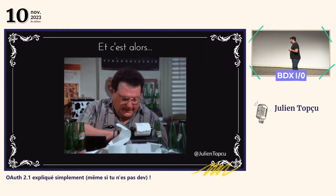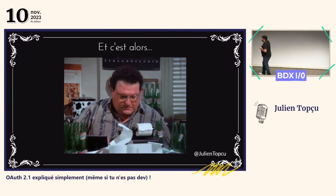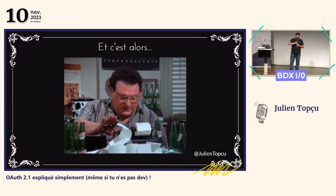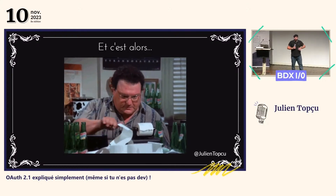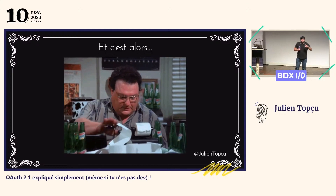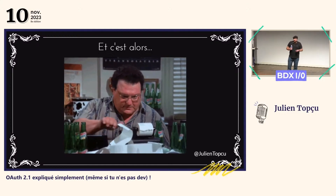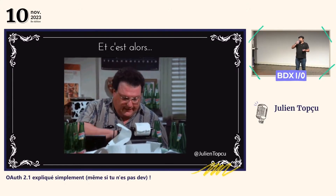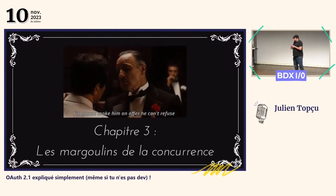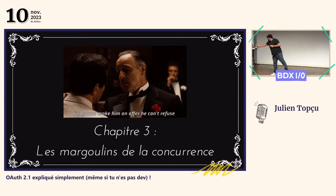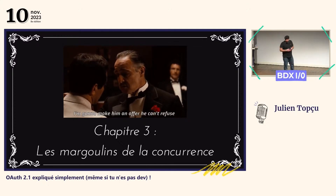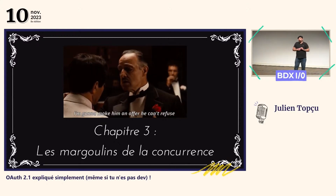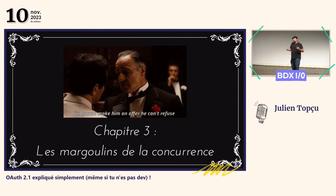Je vous présente Gary, un comptable de l'hôtel. Lui aussi, un jour, il déboule dans le bureau de Gustave furieux parce que des entreprises avec lesquelles on ne bosse pas nous réclament des sommes exorbitantes. Elles auraient été en mesure de faire des livraisons de pâtisseries alors qu'on ne bosse pas avec elles. On s'est demandé comment c'était possible. En fait, quand on a cherché un prestataire pour faire nos livraisons de pâtisseries, on a choisi Robert Ritz et c'est une exclusivité.